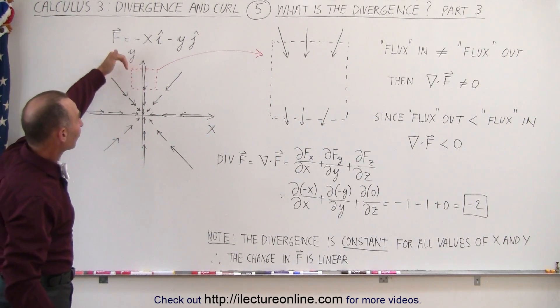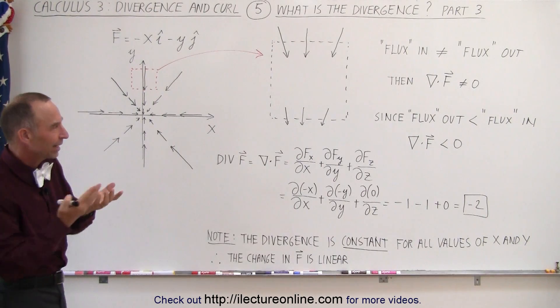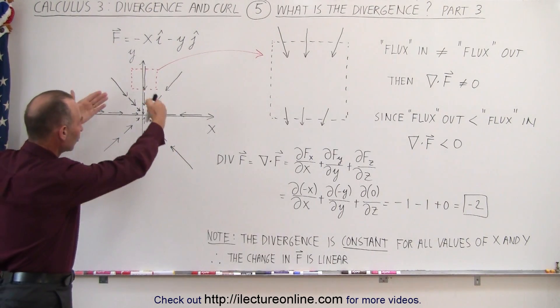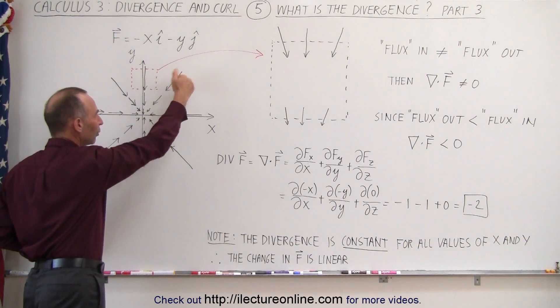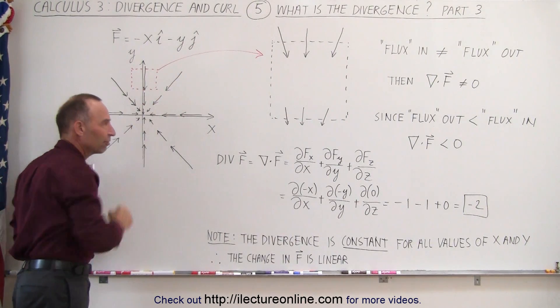We realize that the flux is kind of like if you think of the arrows of the vector field as being fluid flowing. The larger the arrow, the longer the arrow, the more fluid is flowing; the shorter, the less fluid.